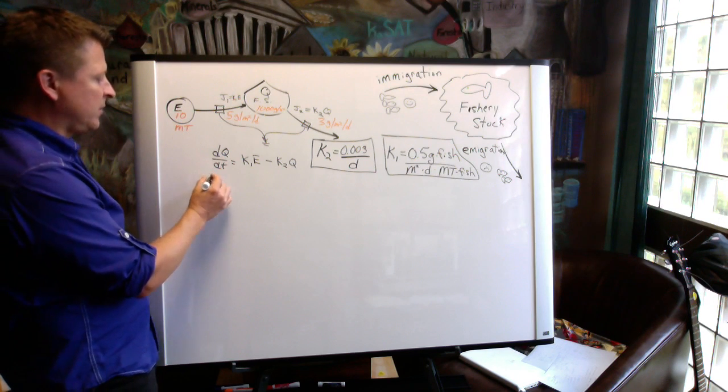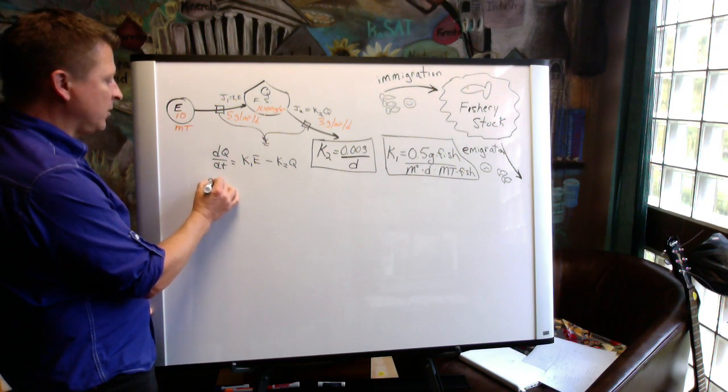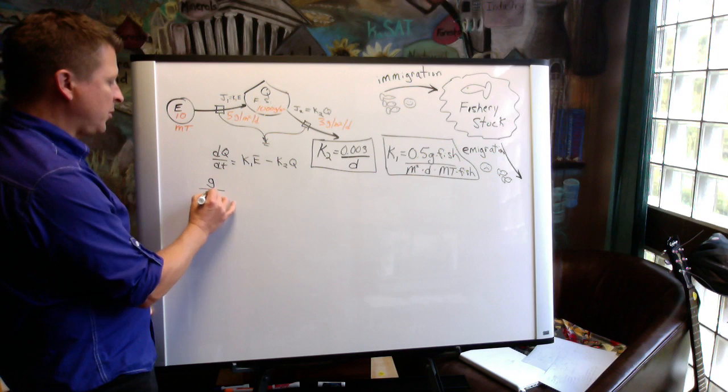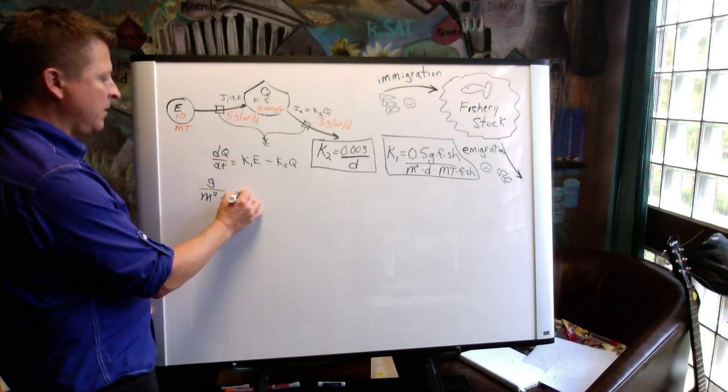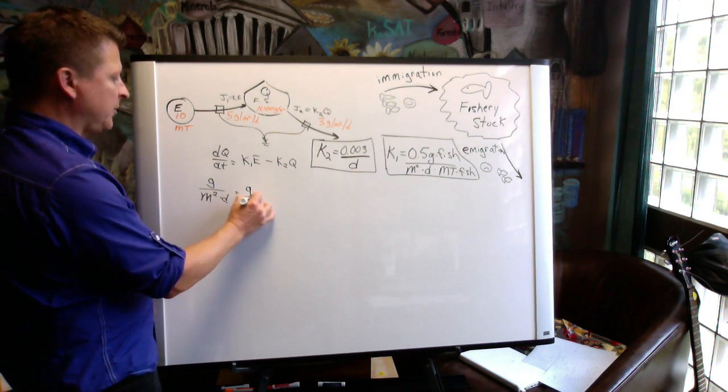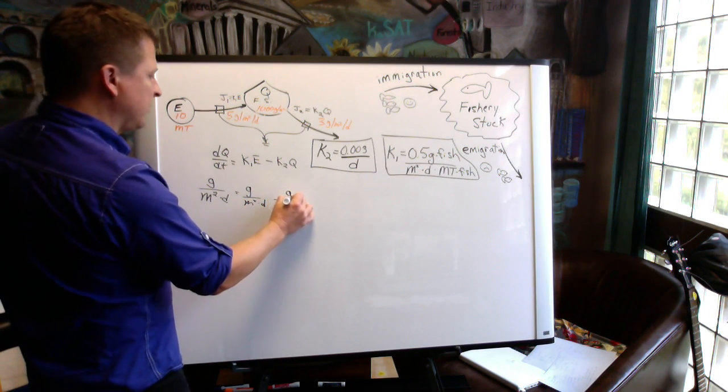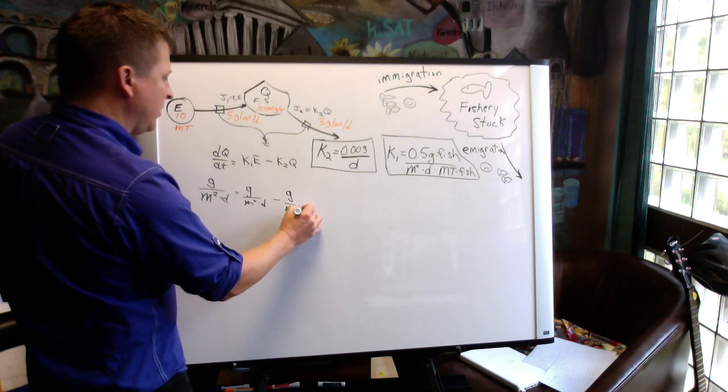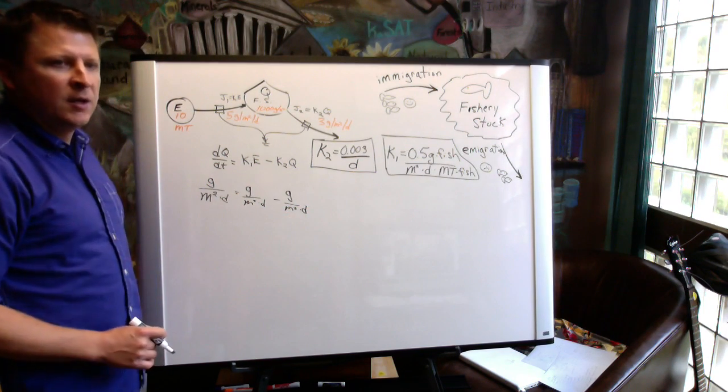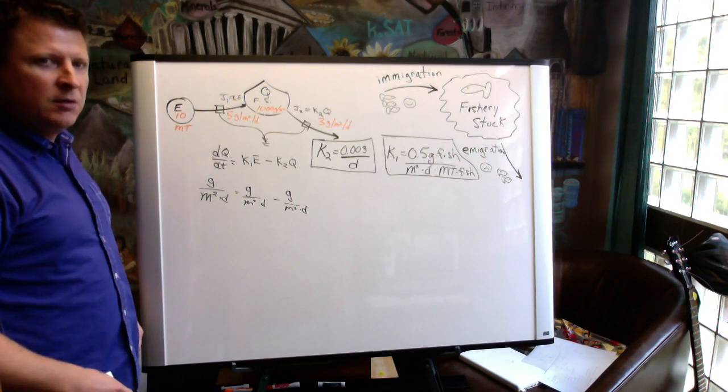So all of our units in this example are going to be grams per square meter per day. On both sides, grams per square meter per day minus grams per square meter per day. Very important to have unit consistency.